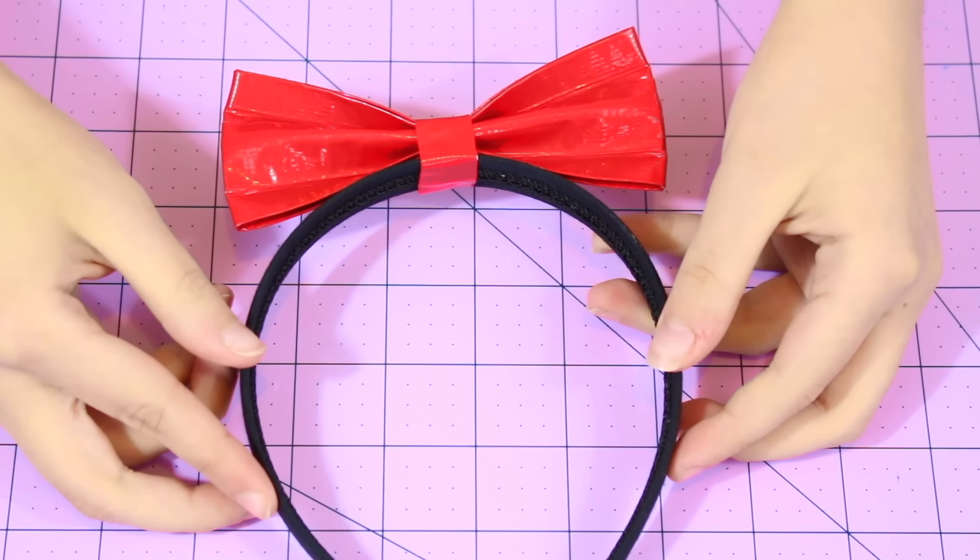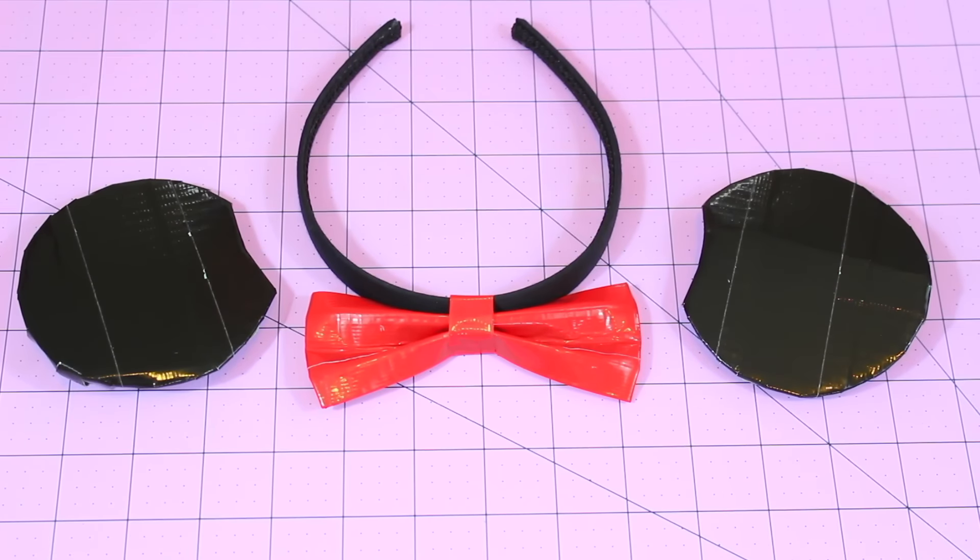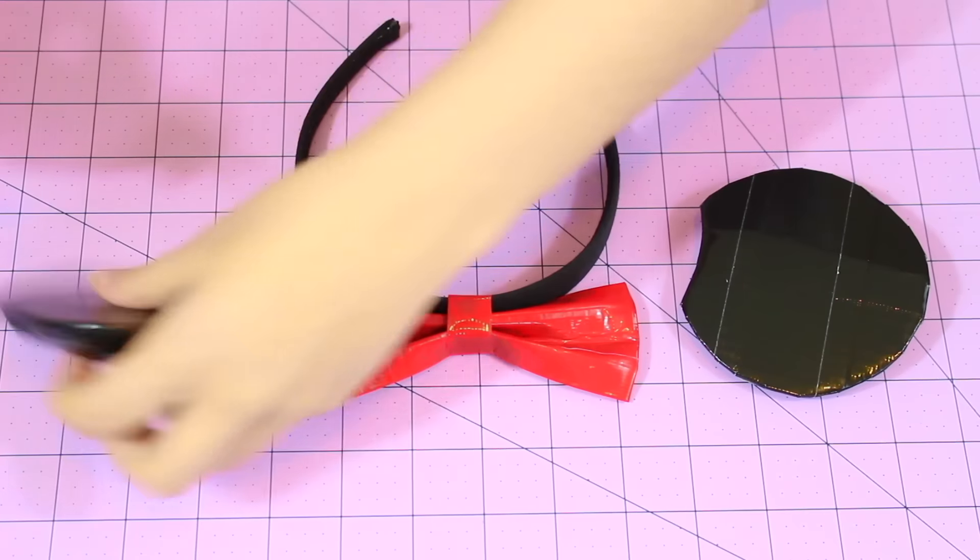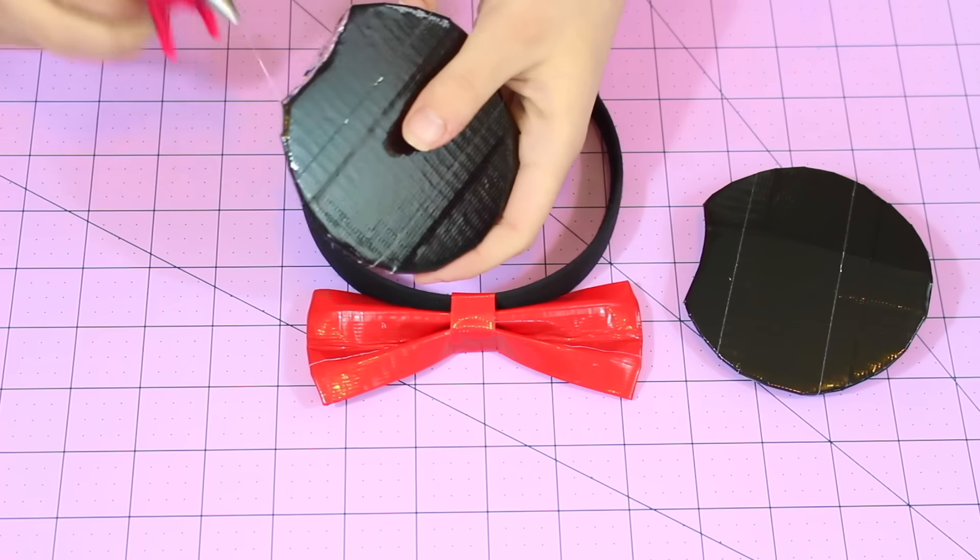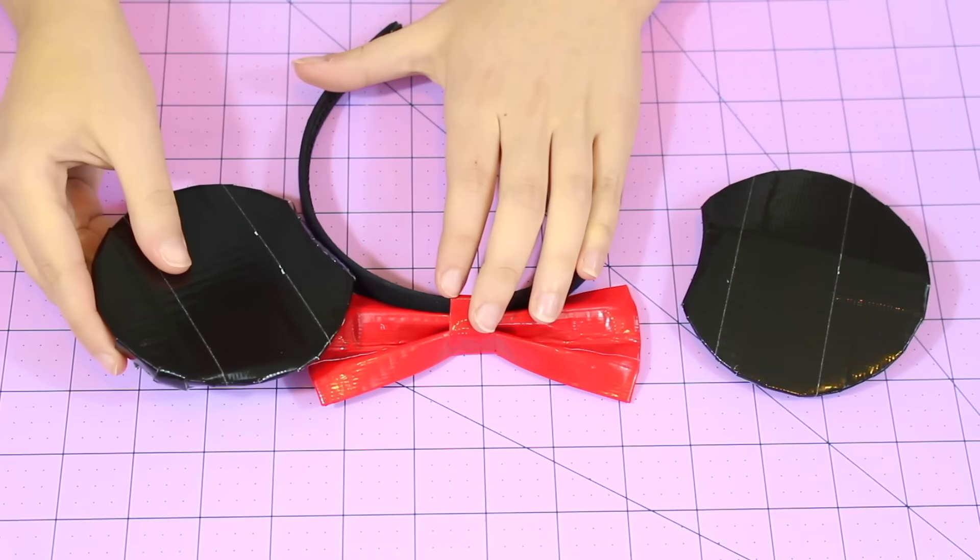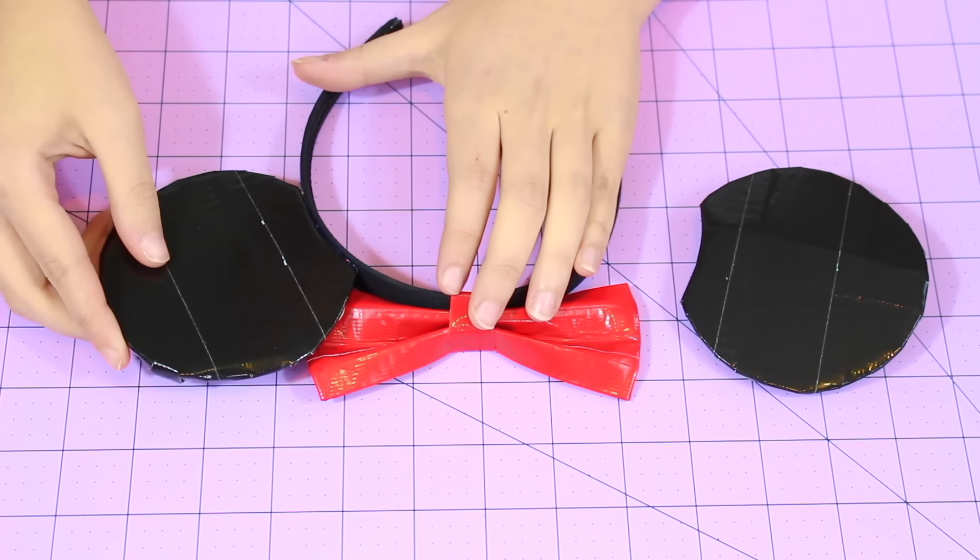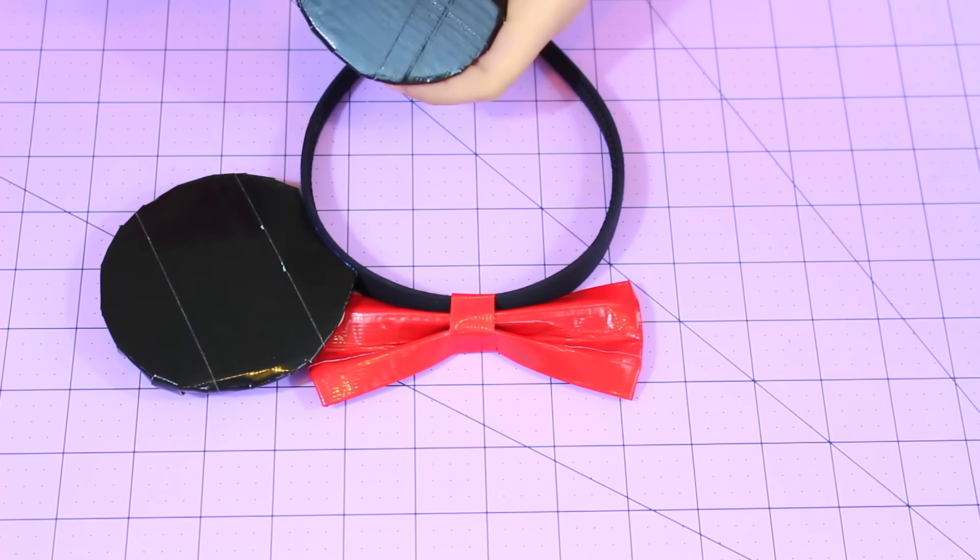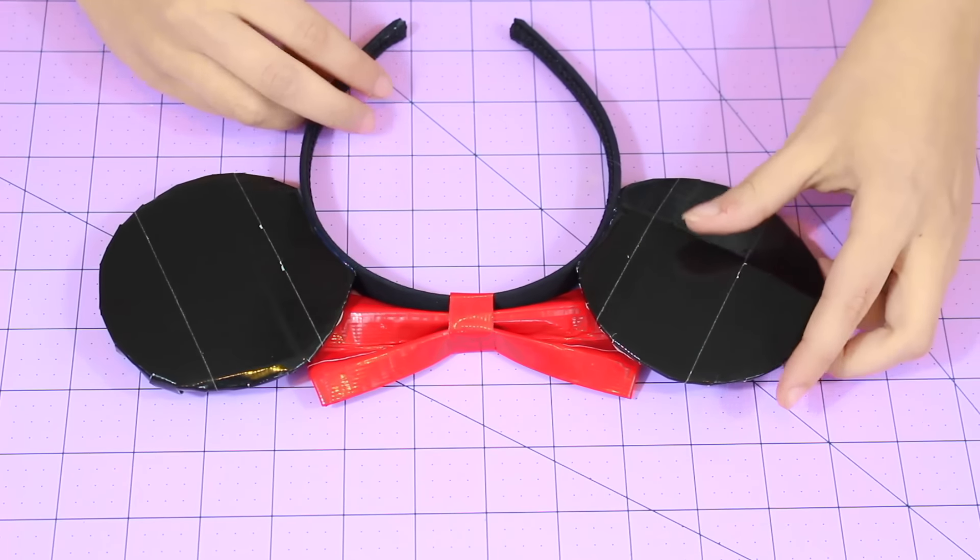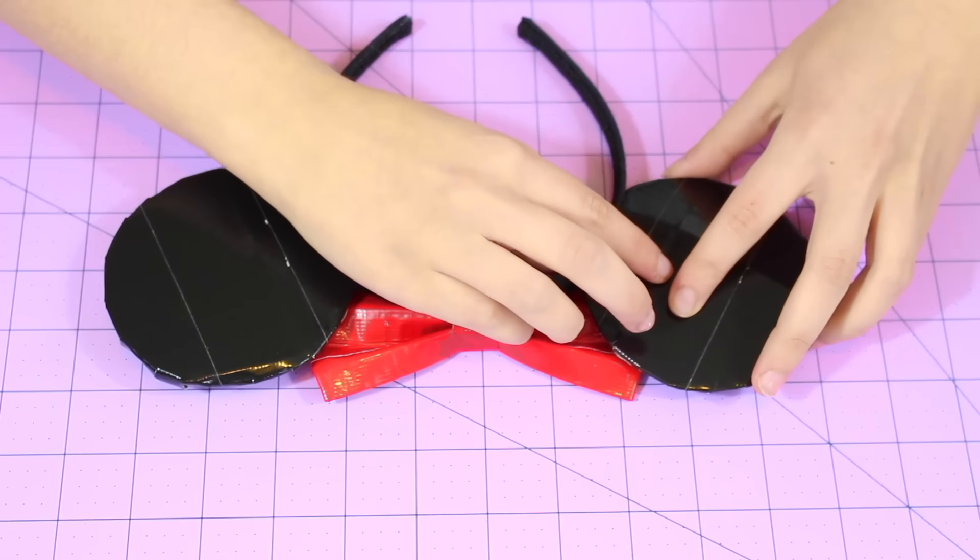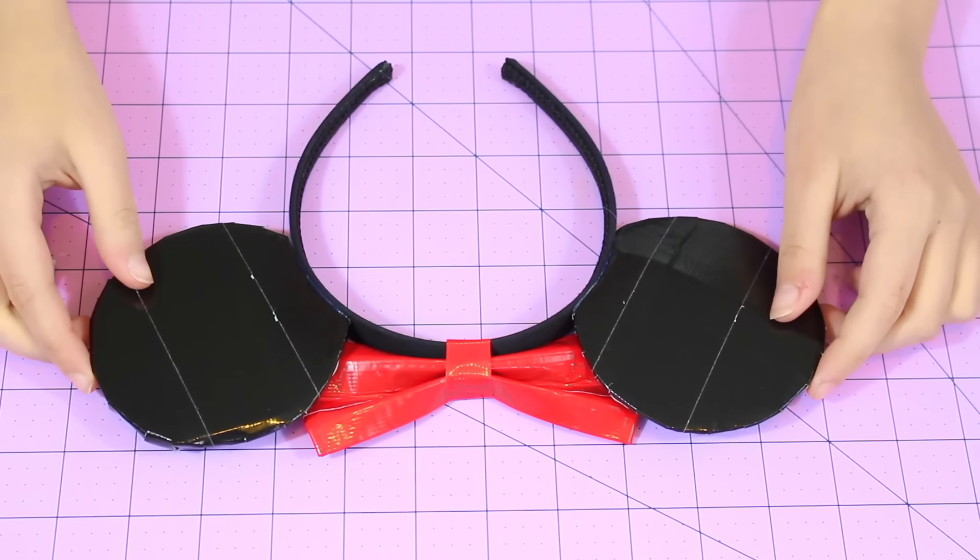Okay guys so now you're going to want your Minnie ears and your Minnie bow all together and we're going to get our hot glue gun. And I'm just going to start putting some hot glue on the bottoms here. Like so. And I'm just going to stick this onto the back. And you just want to hold it there until the glue dries a little bit. And now I'm just going to do the same thing to the other one. Okay. And just hold it there for a minute. Okay so I'm just going to leave these to dry for about 5 minutes and I will be right back.